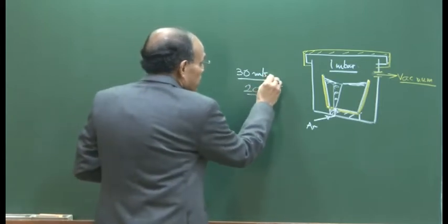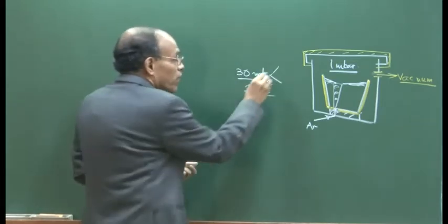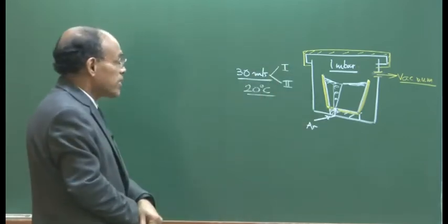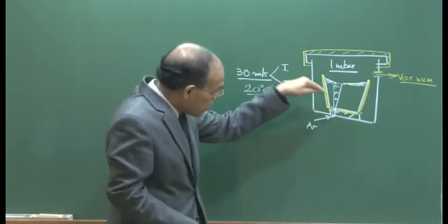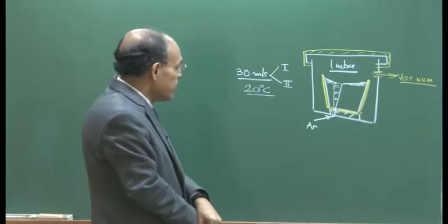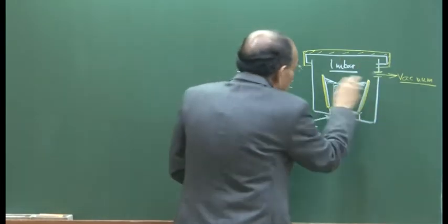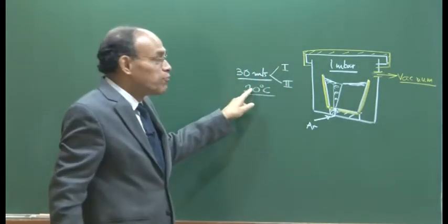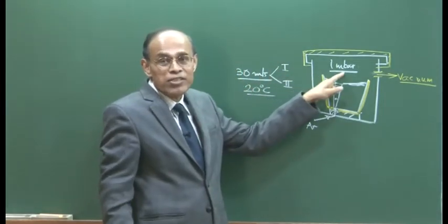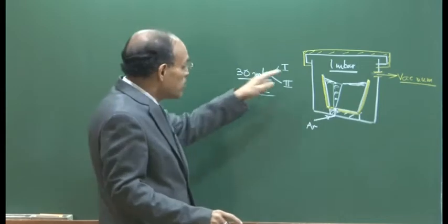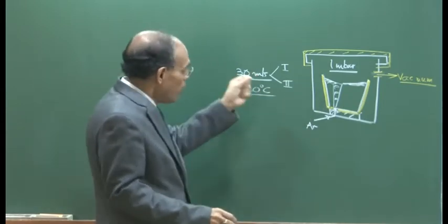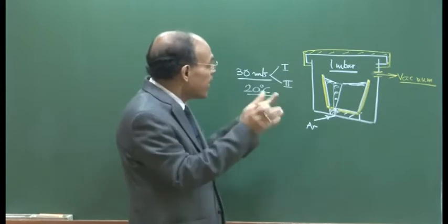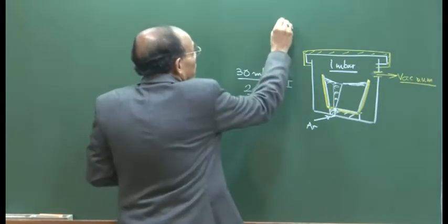The 30-minute period comprises two parts. First is the establishment of the vacuum: once the ladle is placed inside with an overhead crane, the lid closed, and vacuum started, it will take about 10 to 15 minutes before you can get to one millibar pressure. After this period, as the pressure starts to fall, degassing begins.